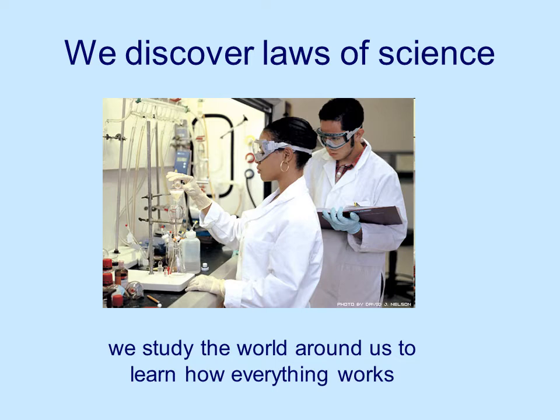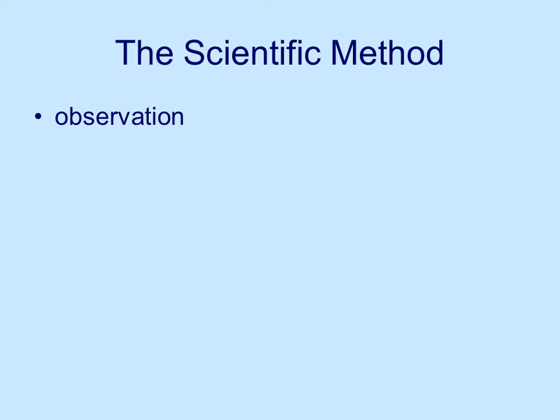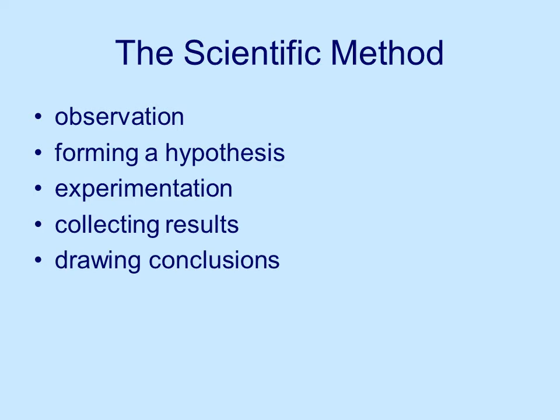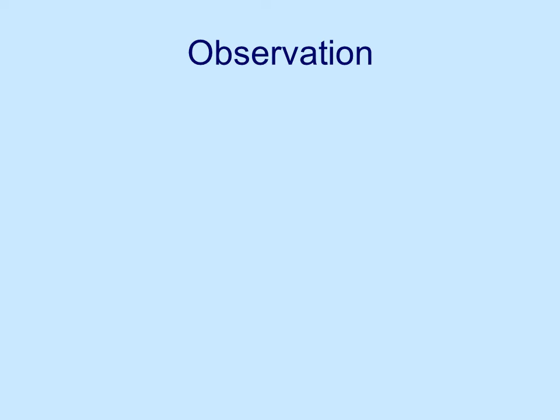We study the world around us, and then we learn how everything works. Eventually, if things work the same way enough times, we consider that a law. This requires what we call the scientific method. This is not a cookbook process, but it gives you some idea of how scientists go about things. First, you observe something — you see something happening — and then you ask the question: why did that happen? You form a hypothesis; actually, you form several hypotheses to try to explain the situation. You then develop experiments to test your hypotheses, collect the results, and draw some conclusions as to what things mean.